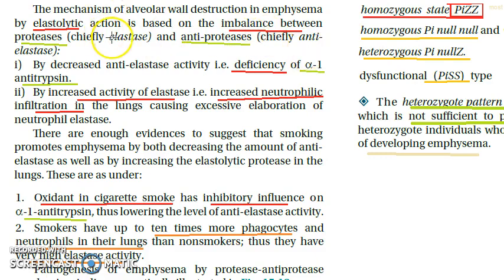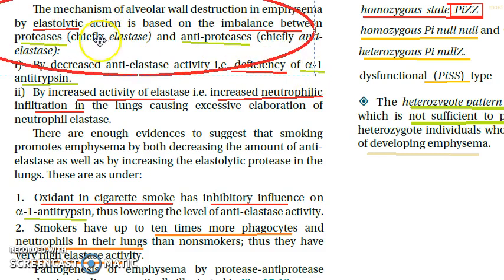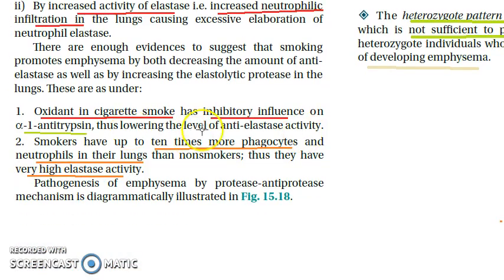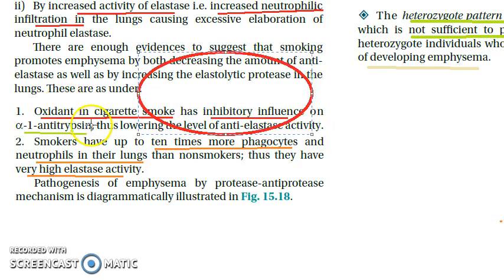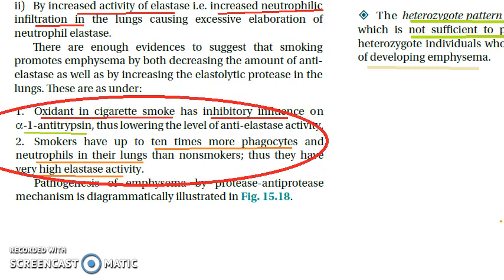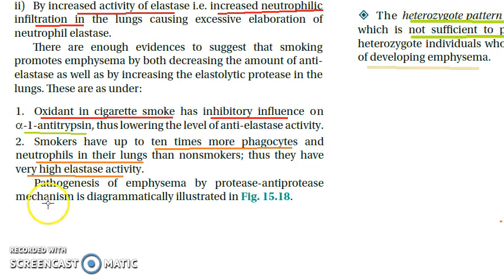In summary, destruction of the alveolar wall is due to elastolytic action caused by an imbalance between proteases and anti-proteases, resulting from deficiency of alpha-1 antitrypsin and increased elastase activity from neutrophil infiltration. Oxidants in cigarette smoke have an inhibitory influence on alpha-1 antitrypsin. Smokers also have more phagocytes and neutrophils in their lungs, resulting in very high elastase activity.